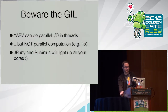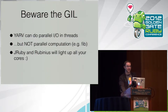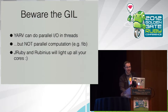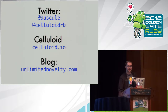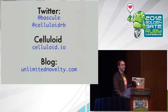One thing to worry about is the GIL. You can do parallel I/O with YARV — if you want to do a bunch of Net::HTTP requests, you can. But for CPU-bound work like Fibonacci, you're bound to one core, and for that you probably want to use JRuby or Rubinius. I'm @bascule on Twitter. If you don't want to hear me rant, you can also follow @CelluloidRB, which is Celluloid-specific stuff. Visit celluloid.io if you want to learn more. I also have stickers if you want one — hit me up when I'm done.